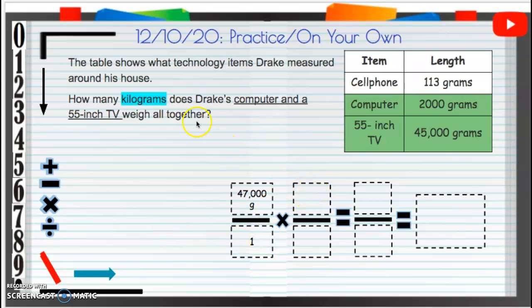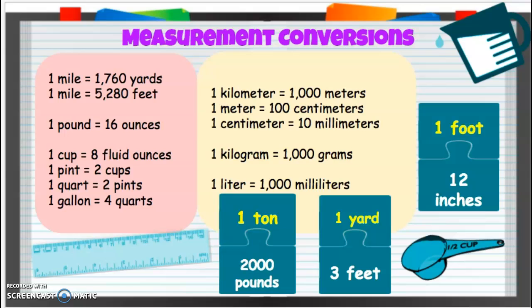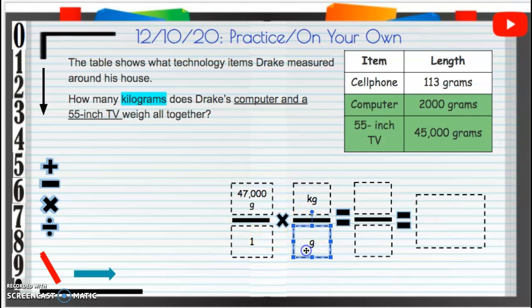Now we're trying to get to kilograms, so we're trying to get rid of grams. Let's take a look at kilograms and grams. One kilogram equals one thousand grams.